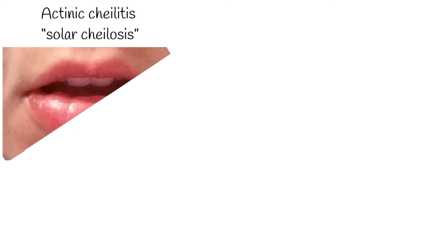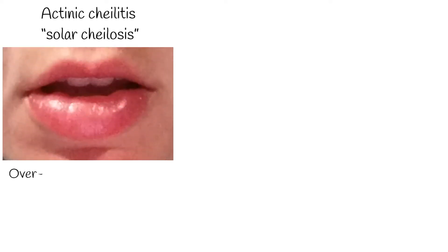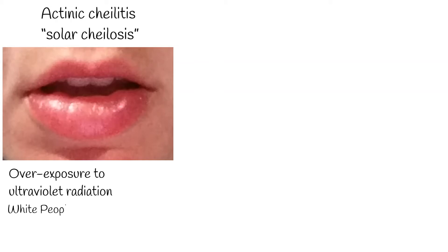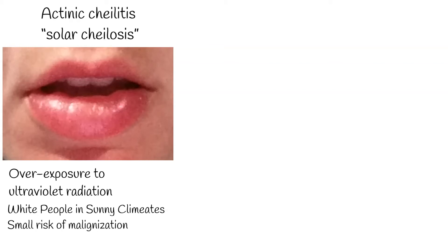Actinic cheilitis, or solar cheilitis, is the result of chronic overexposure to ultraviolet radiation in sunlight. The lower lip becomes dry, scaling, and wrinkled, and it can have a grey or white appearance. Solar cheilitis is common among white people who live in sunny climates, and it has a small risk of malignization.